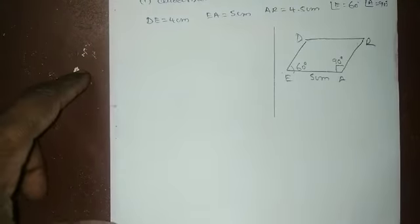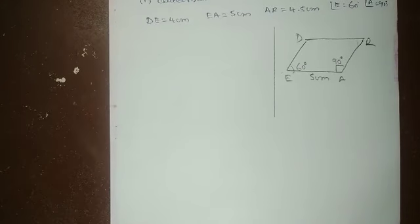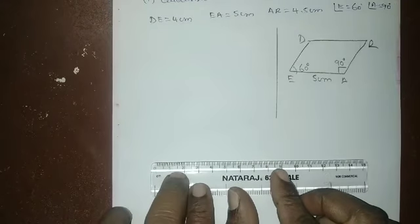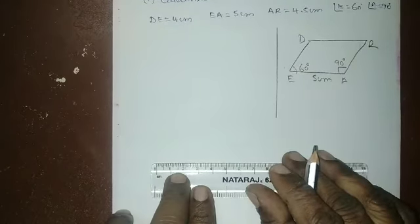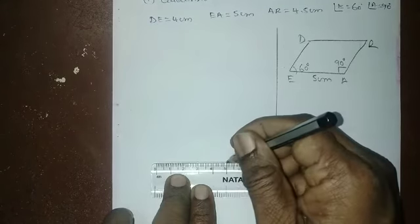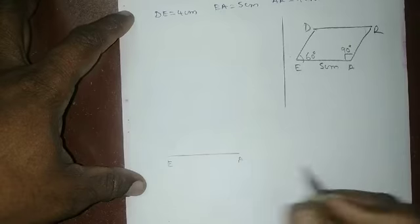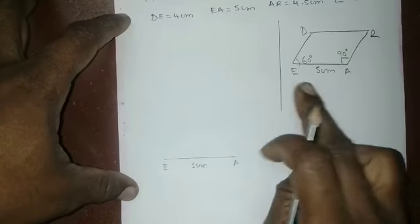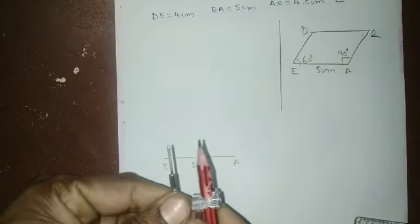Now let's see how to construct this quadrilateral. What is the length of EA? EA is 5 cm. Take 5 cm of length. This is the 5 cm base EA. What is the angle at EA? This is 60 degrees — take the suitable measurement.